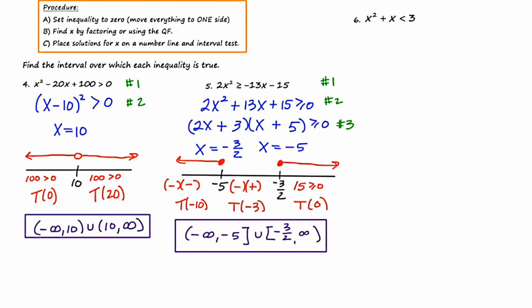And for our last problem, number 6, we have x² + x is less than 3. I'll start by moving the 3 to the other side so that everything is on one side and zero is on the other side.